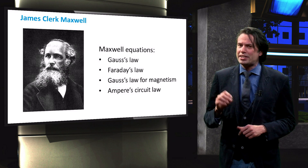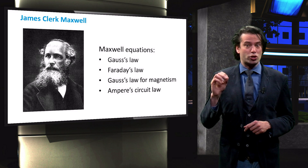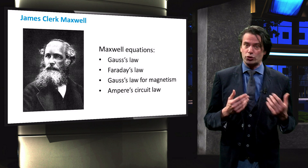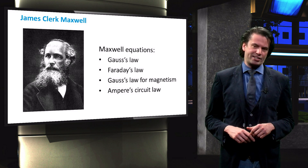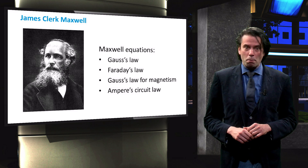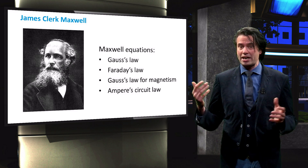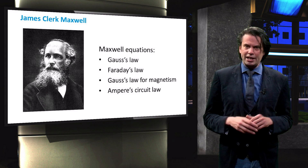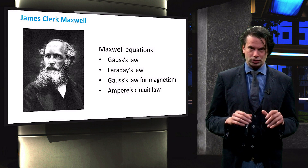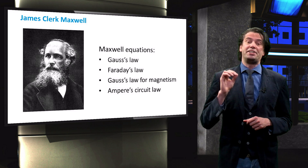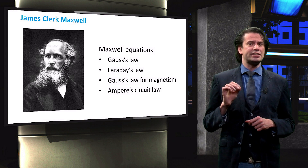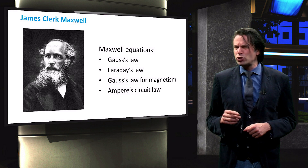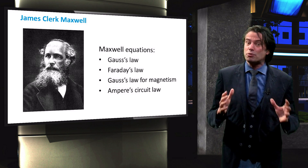Between 1861 and 1862, the Scottish physicist James Clerk Maxwell published works in which he managed to formulate the complete electromagnetic theory by a set of equations. He combined Gauss' law of magnetism, Faraday's law of induction, and Ampere's circuit law into what is known as the Maxwell equations. One of the most important predictions of this set of equations is the presence of electromagnetic waves. Maxwell soon realized that light itself is an electromagnetic wave.